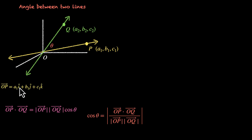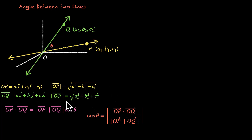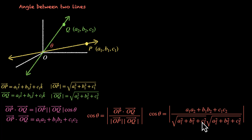OP vector is A1·i-cap plus B1·j-cap plus C1·k-cap, and OQ vector is A2·i-cap plus B2·j-cap plus C2·k-cap. To use this formula, we need the magnitude and the dot product. Magnitude of OP vector is the square root of A1² + B1² + C1², and magnitude of OQ vector is the square root of A2² + B2² + C2². The dot product is A1A2 + B1B2 + C1C2. Now we have all the ingredients and cos of theta equals the dot product divided by the product of their magnitudes.